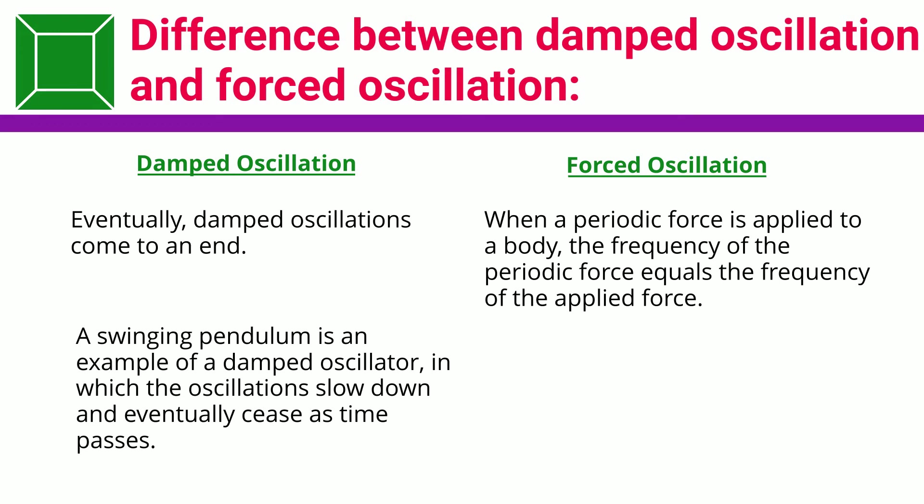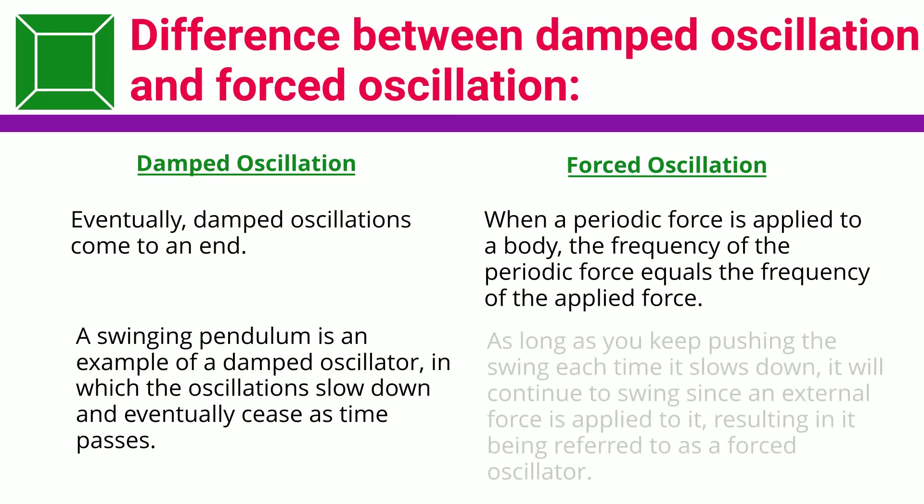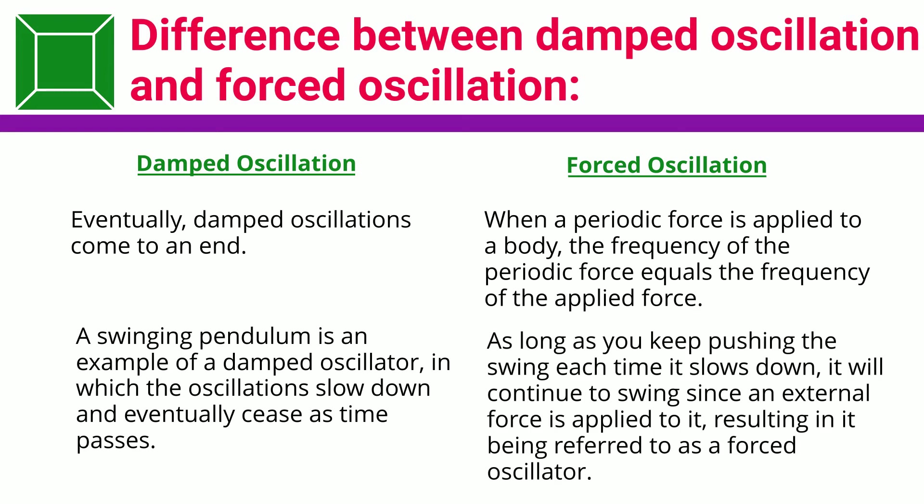A swinging pendulum is an example of a damped oscillator, in which the oscillations slow down and eventually cease as time passes. As long as you keep pushing the swing each time it slows down, it will continue to swing since an external force is applied to it, resulting in it being referred to as a forced oscillator.